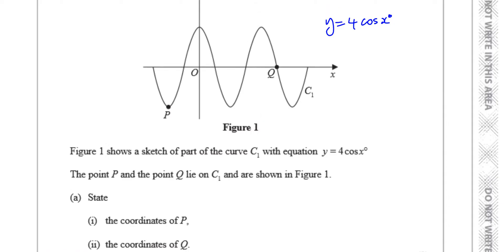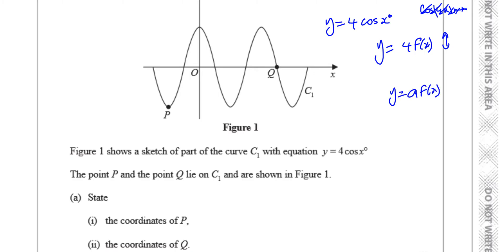So if this is y equals 4 times cosine x, think about y equals cosine x — that goes from 1 to minus 1 as its maximum and minimum. This is like a transformation y equals 4 times f(x), so it's outside the function. It's not like cosine of 4x — that's inside the function and causes a horizontal transformation. This one causes a vertical transformation.